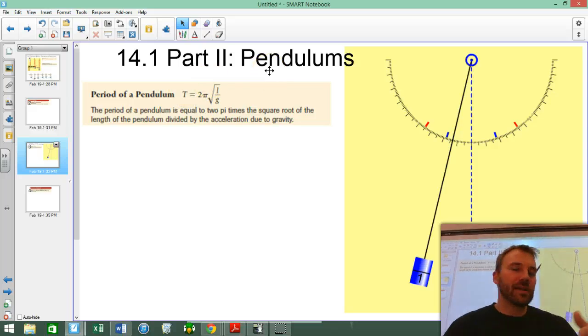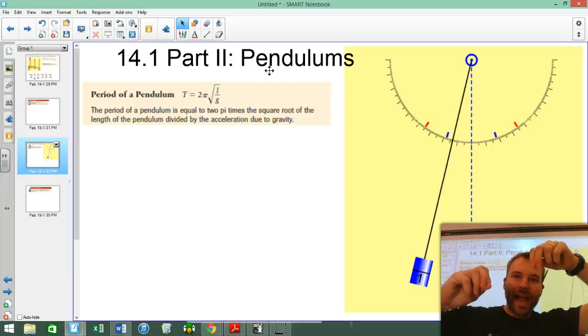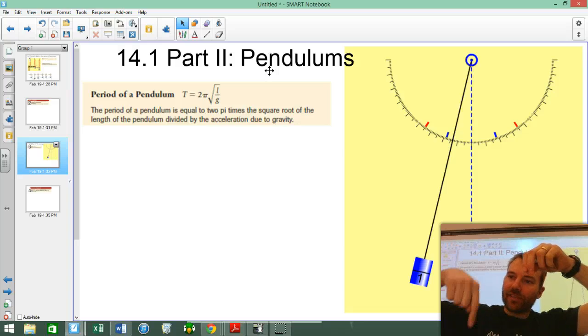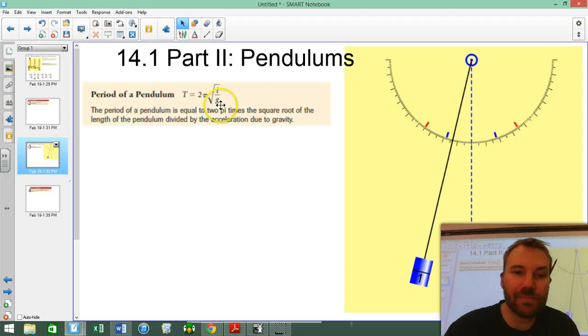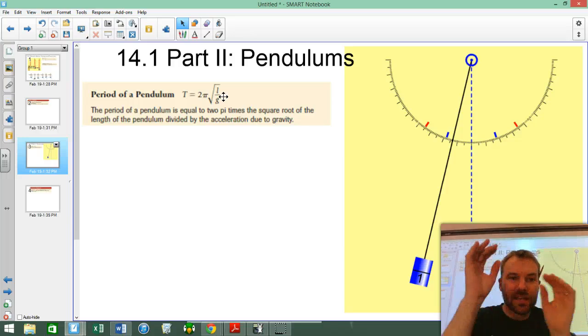And just think about that. Think about if I was in zero gravity. I take a pendulum, I pull it back, I let it go. There's no gravity pulling it down, so it's going to stay there. So its period is infinity. There is none. Gravity is zero, so you divide by zero. One divided by zero, as this gets closer and closer, it becomes infinity.